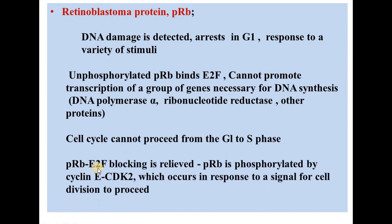However, when the retinoblastoma protein and E2F blocking is released, the retinoblastoma protein is phosphorylated by cyclin E-CDK2. After that, the blocking is released. This phosphorylation occurs in response to a signal for cell division to proceed — the cell is giving a signal that cell division will continue.